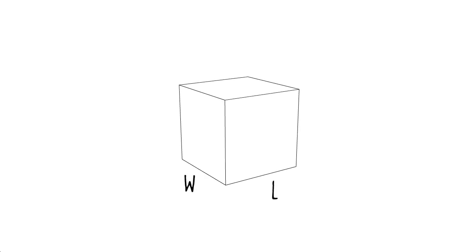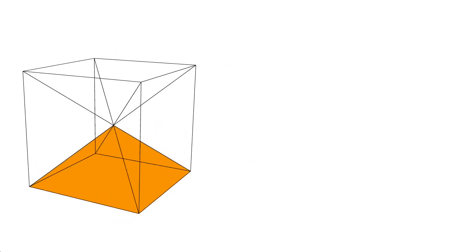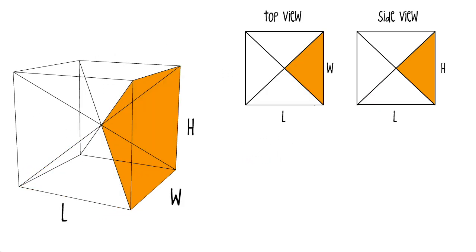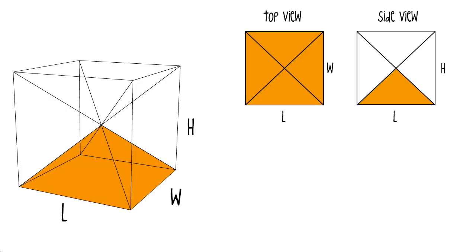We begin with a cube, and let's go ahead and label its length, width, and height. Now a cube can always be divided into 6 equal pyramids. The base of each pyramid is length times width, and the height is going to be the height of the cube divided by 2.